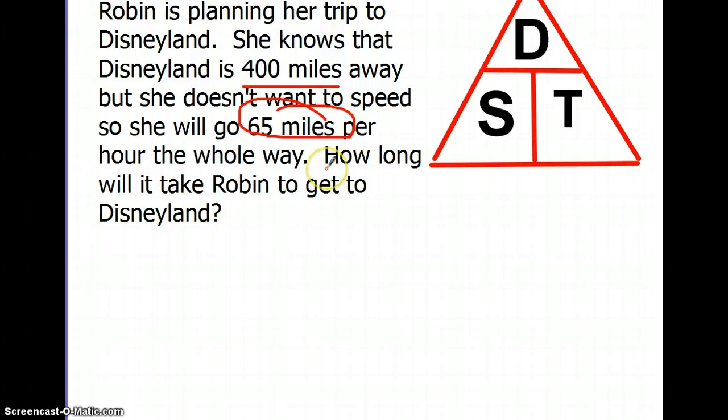When I'm saying something like how long did it take her, that means I'm trying to find the time. So, cover up the time. Now the formula for time would be distance divided by speed.